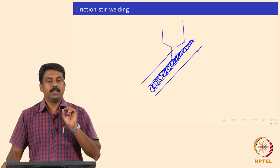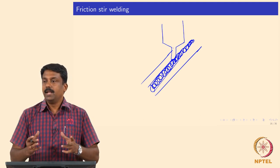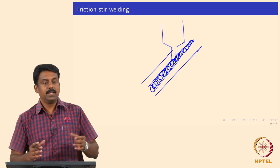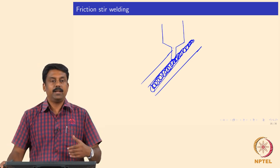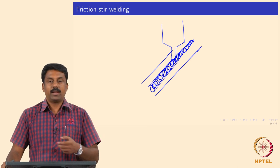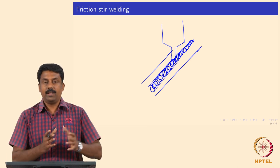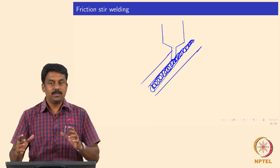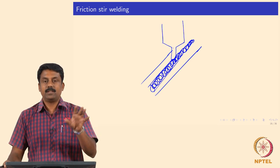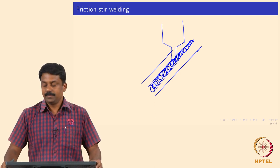Generally in friction stir welding, there are different zones — like in a conventional fusion weld we have a heat affected zone, fine grain HAZ, coarse grain HAZ, and fusion zone. Friction stir welding also has distinctive zones. We will just see an overview and go further in this class.